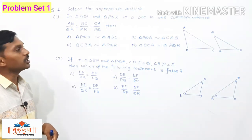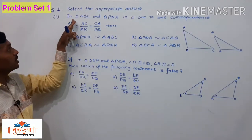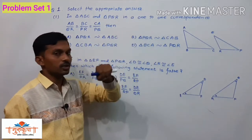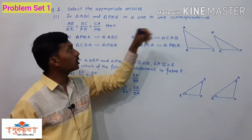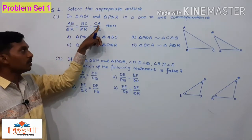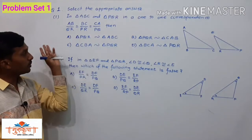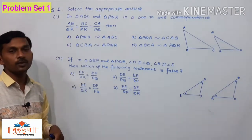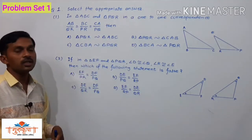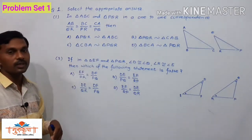The first example: in triangle ABC and triangle PQR, in a one-to-one correspondence, AB upon QR is equal to BC upon PR is equal to CA upon PQ. Then those two triangles are similar to each other by which correspondence? Here we have given the names according to correspondence — out of these four options, which one is the correct one-to-one correspondence?